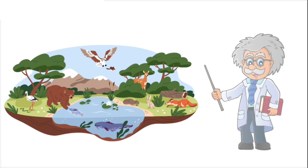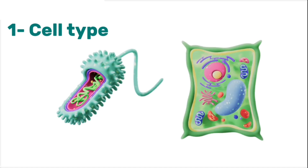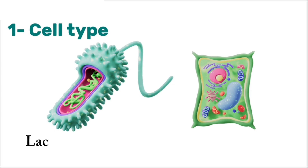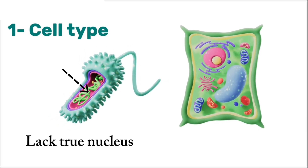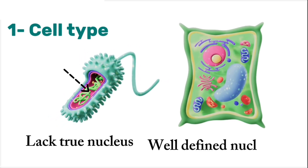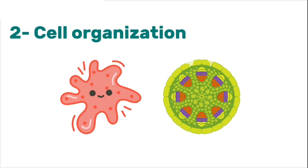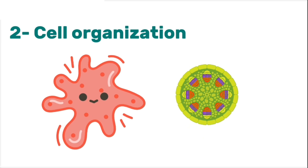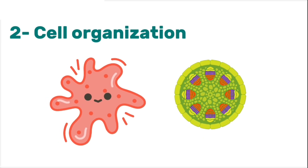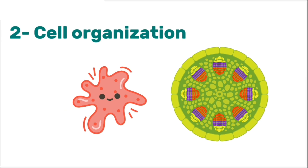To classify living organisms, scientists use three main criteria. The first is cell type — whether the organism has prokaryotic or eukaryotic cells. Prokaryotic cells are simple and lack a true nucleus; their DNA floats freely in the cell. Eukaryotic cells, on the other hand, have a well-defined nucleus and membrane-bound organelles like mitochondria and chloroplasts. The second criterion is cellular organization — whether the organism is made of just one cell or many cells. Unicellular organisms perform all life functions within a single cell.